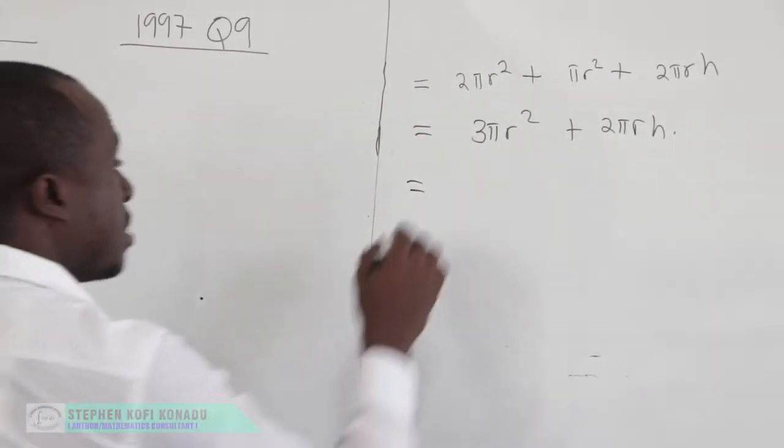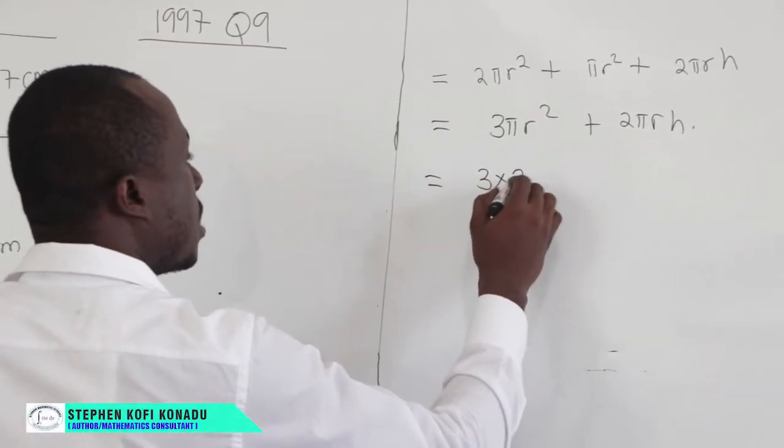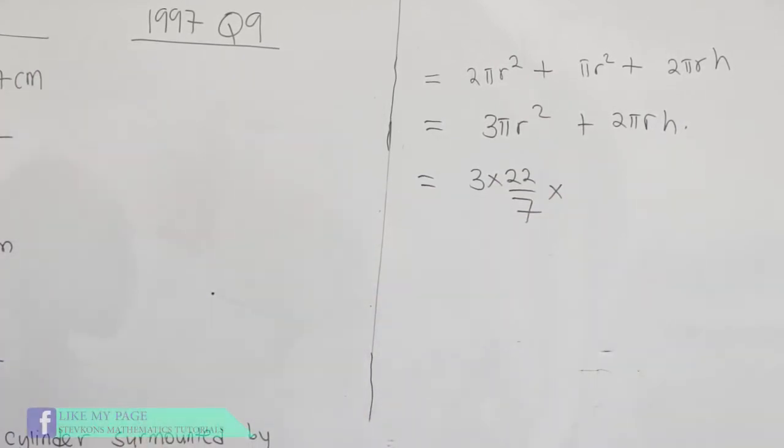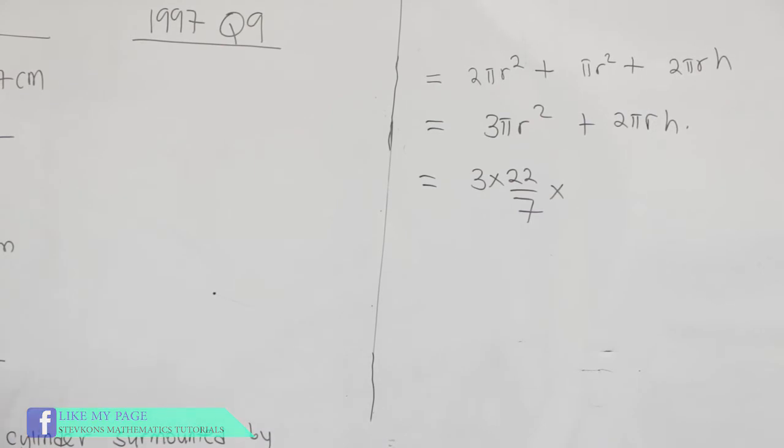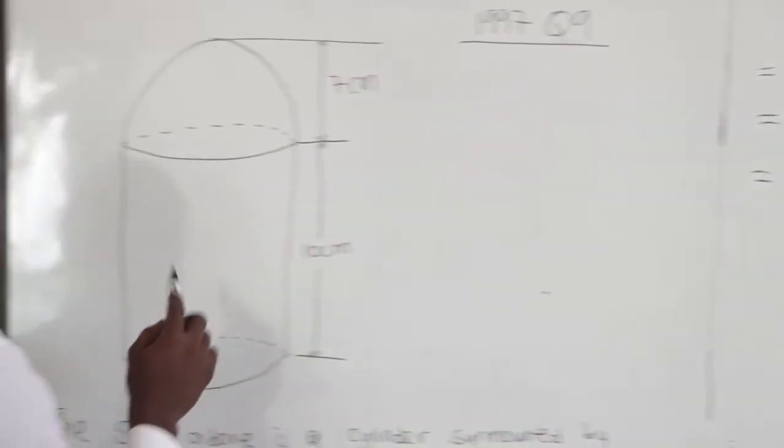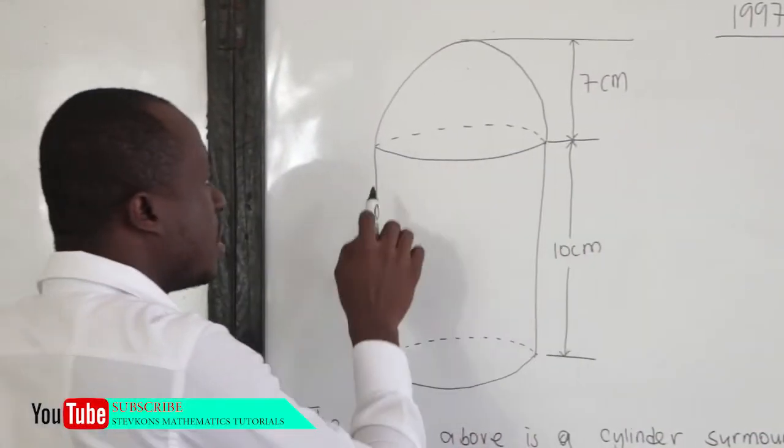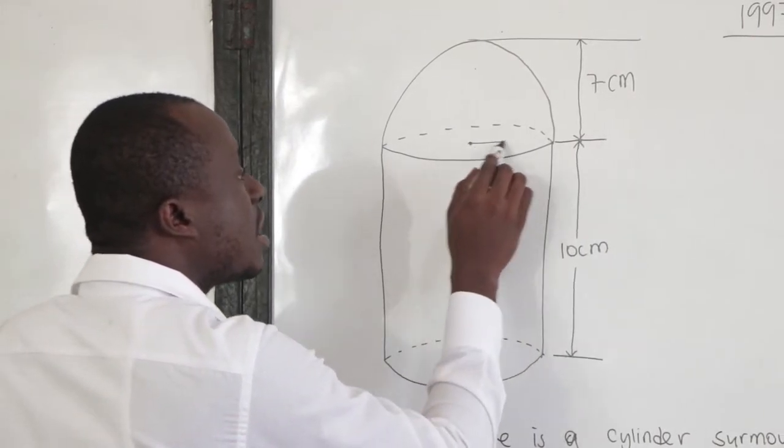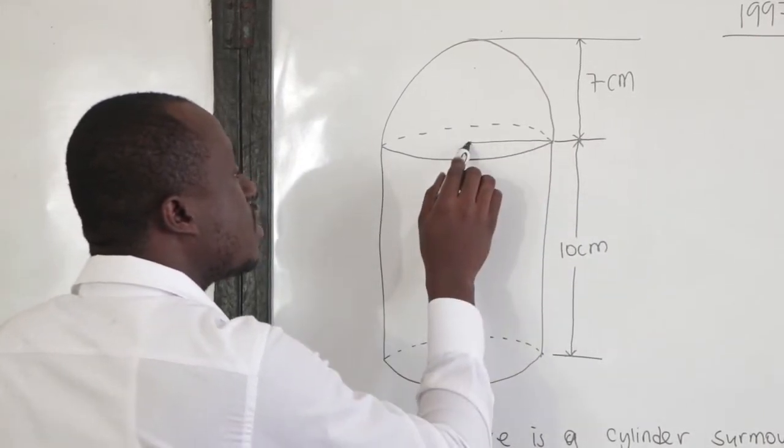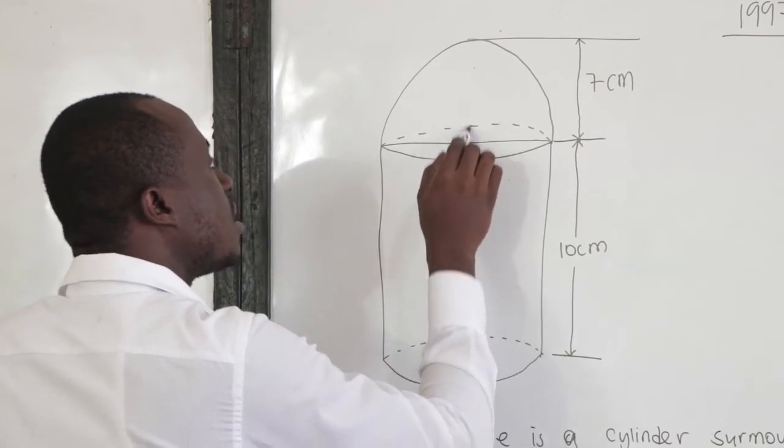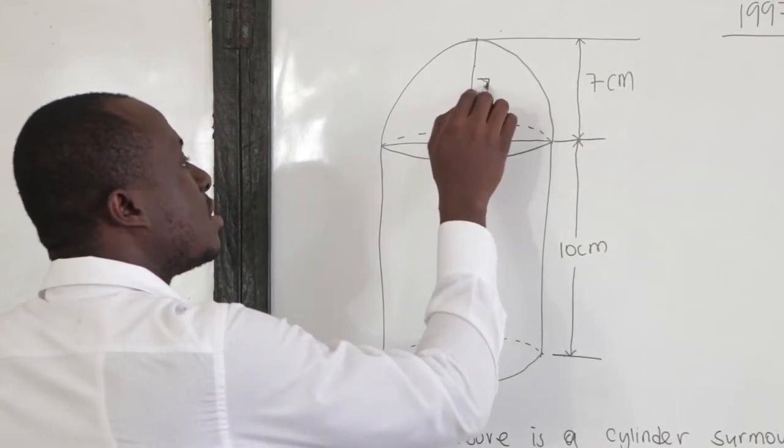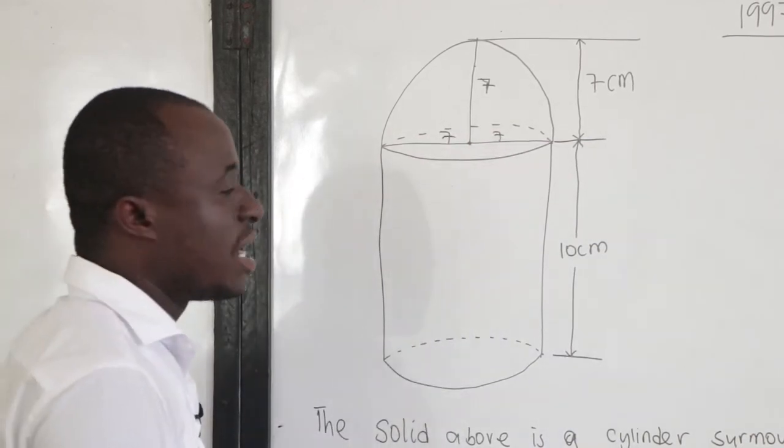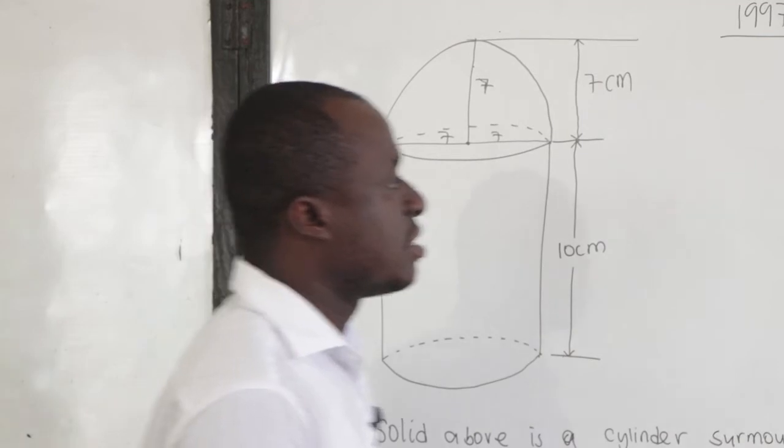What is pi? Pi is 22 over 7, so 3 times 22 over 7. Now, what is the radius? The radius, let's be very careful here. Because it has been surmounted, clearly the radius, that is the distance from the center to the circumference, are the same. So if this is 7, this is 7, and this is 7. Clearly, our radius is 7 centimeters.